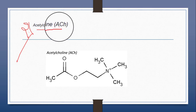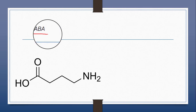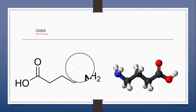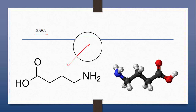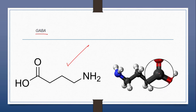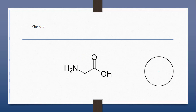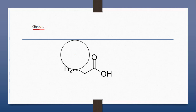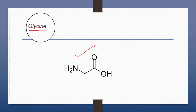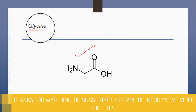The third specific neurotransmitter is GABA, which is synthesized from glutamate. GABA is an inhibitory neurotransmitter within the central nervous system and binds to two different receptors: the GABA-A receptor and the GABA-B receptor. The fourth specific neurotransmitter is glycine, an amino acid used at the majority of inhibitory synapses in the spinal cord and brain stem. Glycine binds to ionotropic receptors which are permeable to chloride and bicarbonate ions.